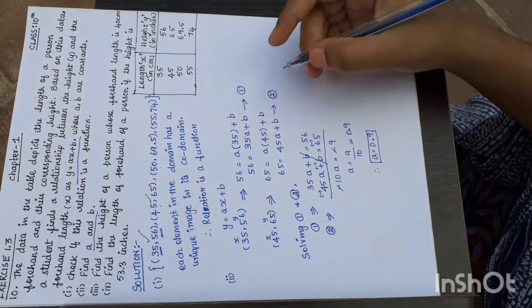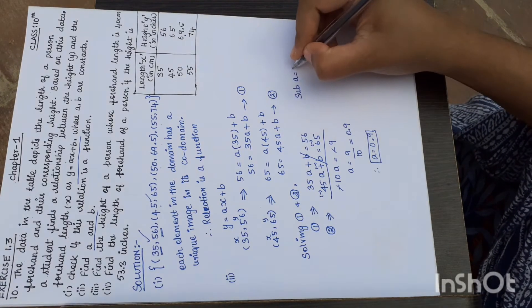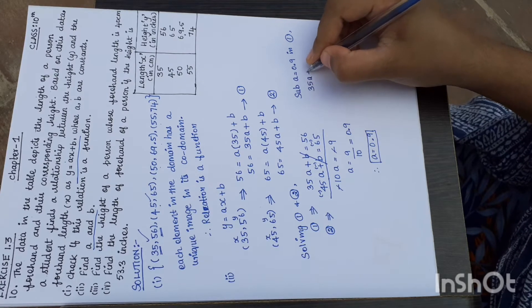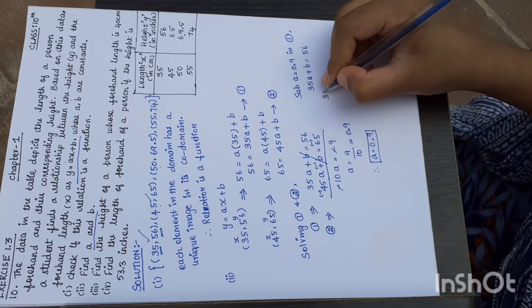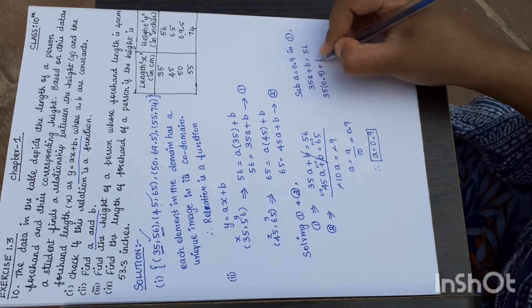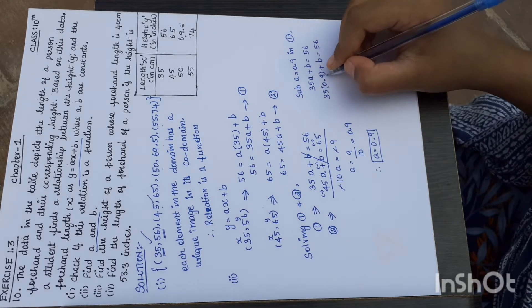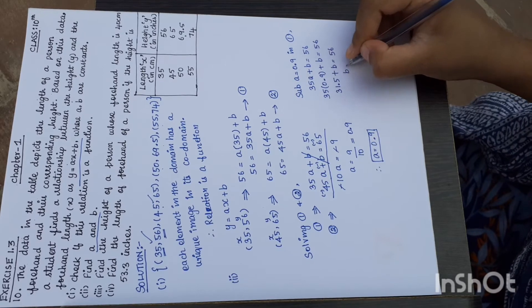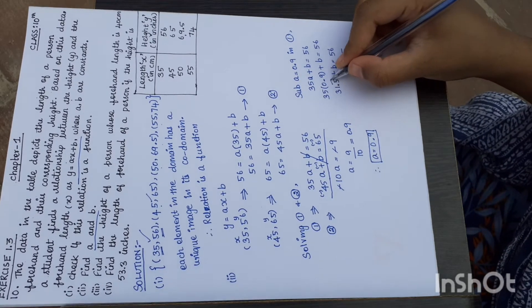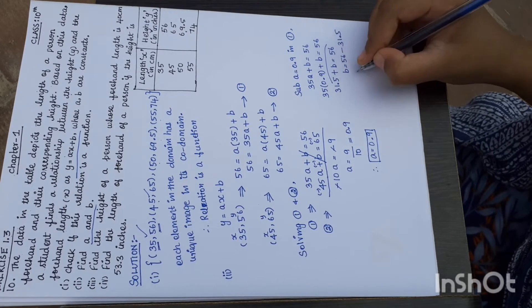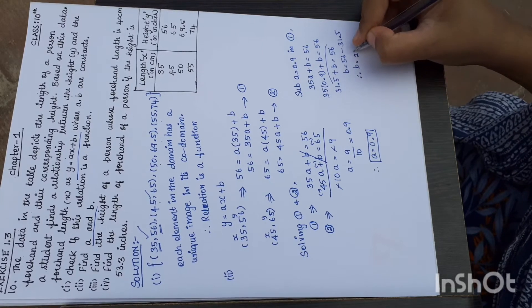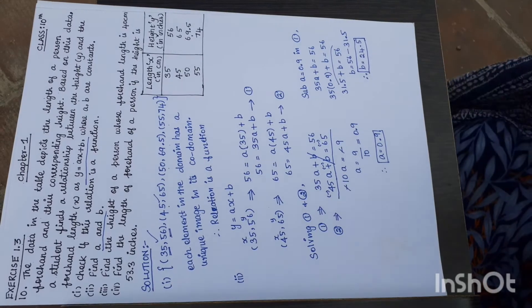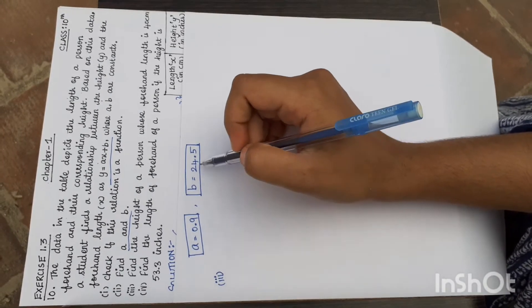Now substitute a equals 0.9 in equation 1. What is our equation 1? 35a plus b equals 56. So 35 times 0.9 plus b equals 56. 35 times 0.9 gives us 31.5 plus b equals 56. Therefore, b equals 56 minus 31.5, which gives b equals 24.5. Now we have got both a and b values: 0.9 and 24.5.